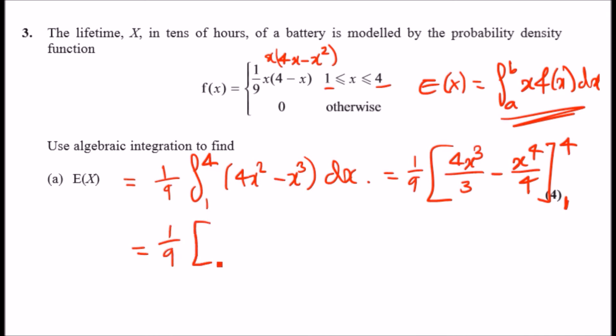Firstly, you just plug in 4, so when you plug in 4, what do you get? Minus, and when you plug in 1, you should get... hold on... the final result should be 64 over 3 minus... and this times 1 over 9.